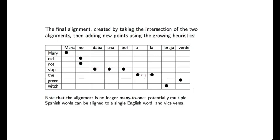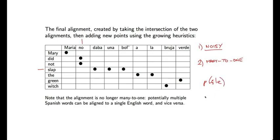Here's an example of the kind of final alignment you might get using these heuristics, which start with the intersected alignments and then add in some points in the union of these two alignments. So this is our final alignment matrix. Notice that the alignment is no longer many to one — there are some English words which are aligned to multiple Spanish words, and similarly there are some Spanish words that are aligned to multiple English words. So to recap, the motivation for this is these two problems: one, that our alignments are often noisy, and two, that they're many to one. What we now have, hopefully, is a set of many-to-many alignments which are more reliable than taking alignments from simply one direction or one model — P(F|E) or P(E|F) alone.